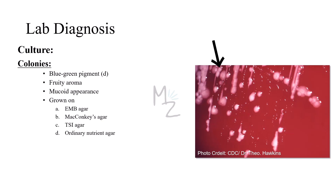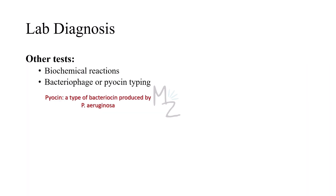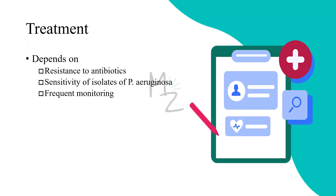The diagnosis of Pseudomonas aeruginosa is confirmed by biochemical reactions. Identification for epidemiologic purposes is done by bacteriophage or pyocin typing. Pyocin is a type of bacteriocin produced by Pseudomonas aeruginosa; different strains produce various pyocins which can serve to distinguish the organisms.